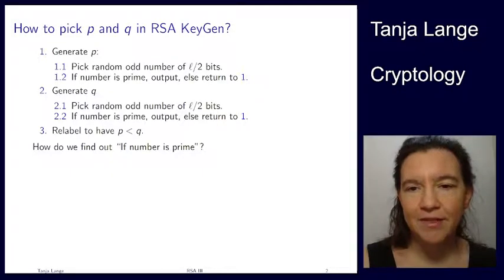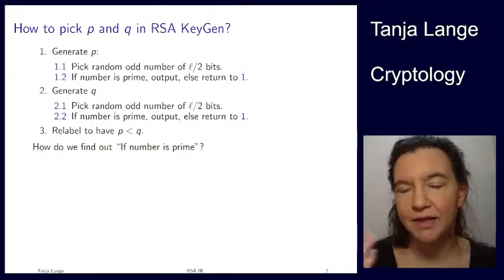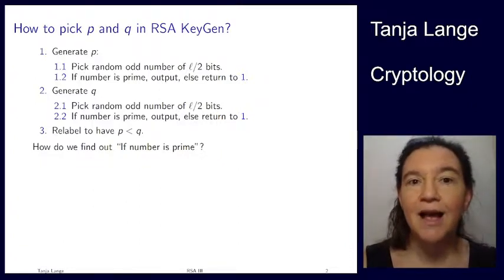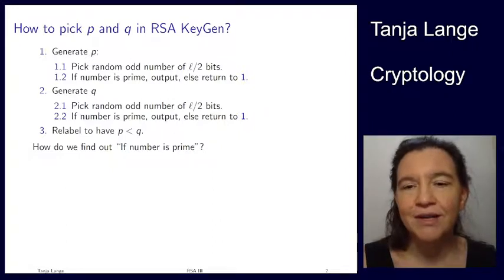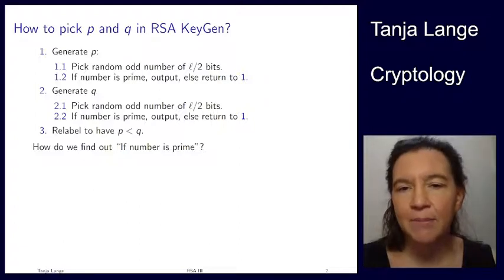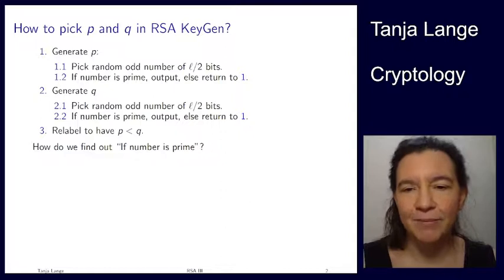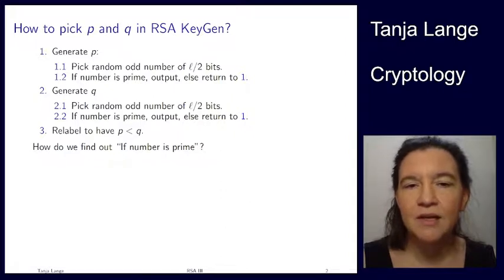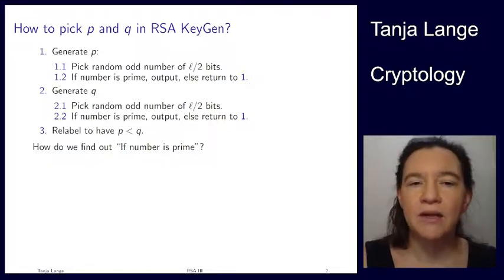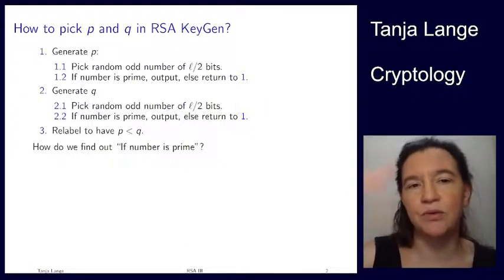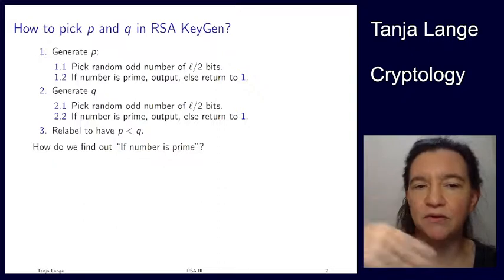This lecture deals with the first step in RSA key generation for both encryption and signatures: how do we actually pick these primes? The typical approach is that since we have no way to directly generate primes, we pick a random odd number of the right bit length — L over two bits — and then ask: is this number prime? If it's prime, we output it for P and Q; otherwise we go back and pick another random number. We do this repeatedly for P and then for Q.